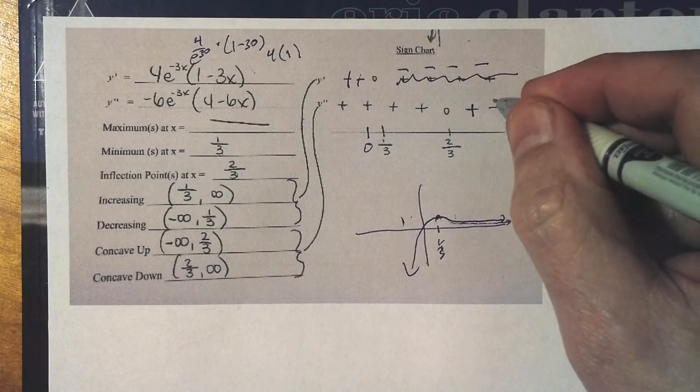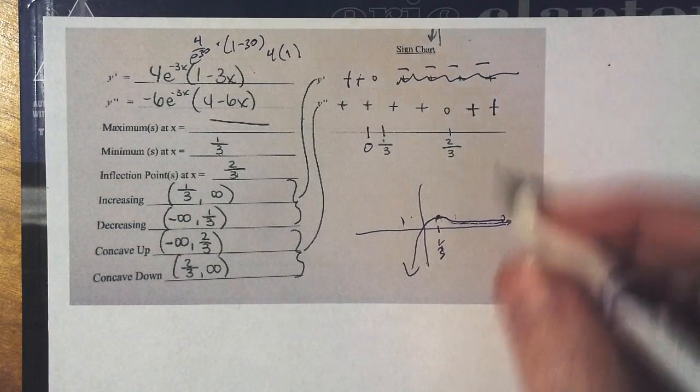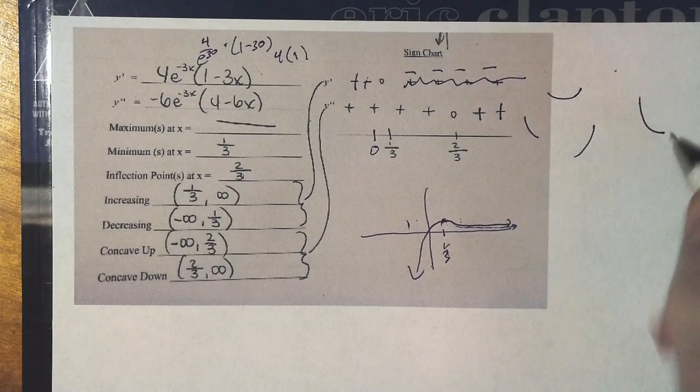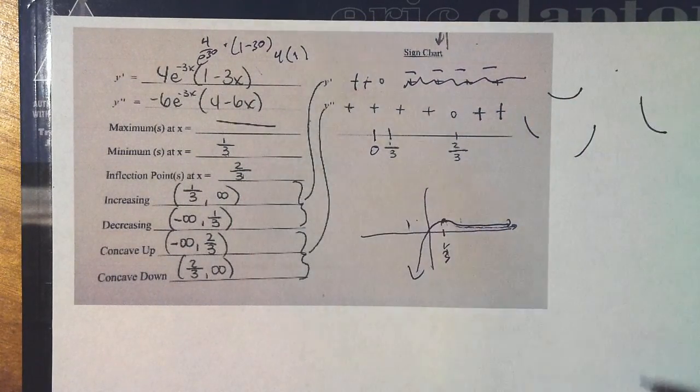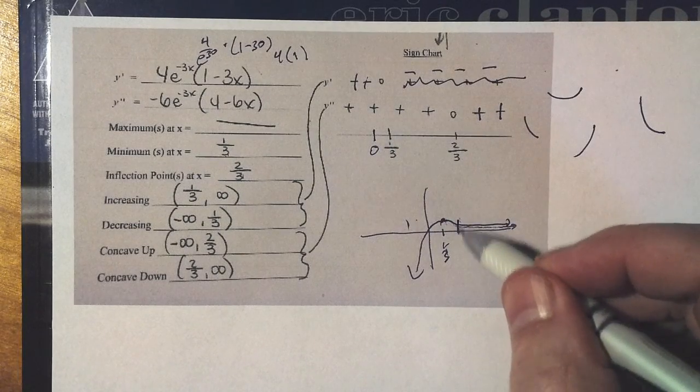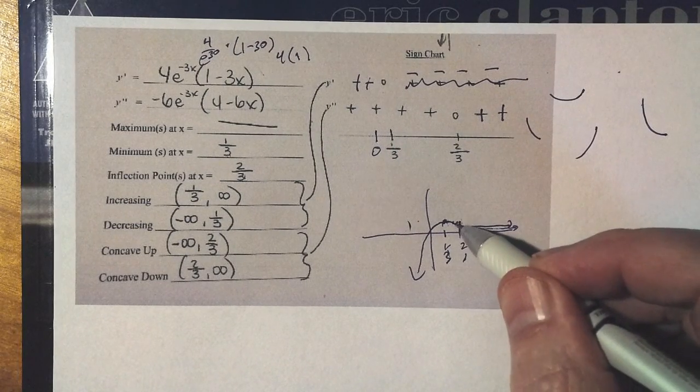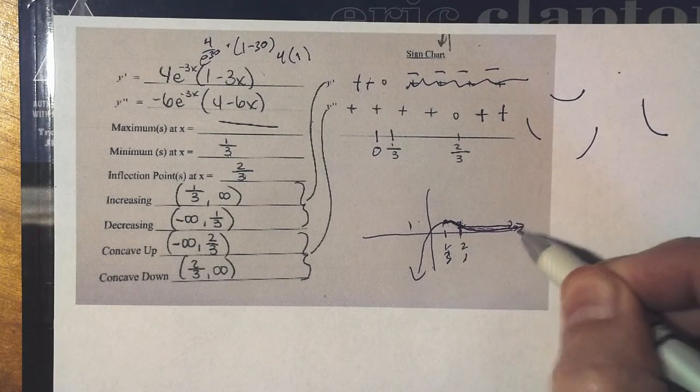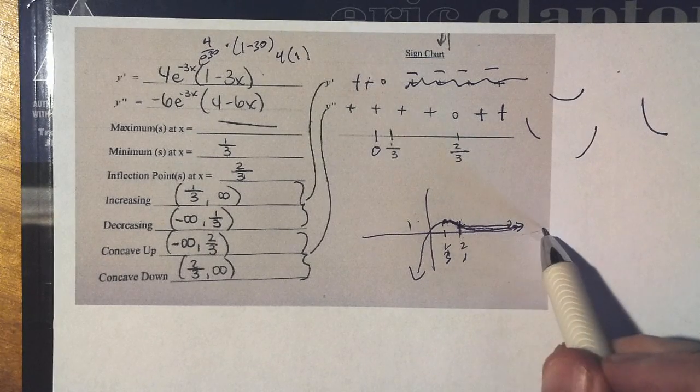And this is positive, which means the graph is cupping up. I mean, take a look. From right here, somewhere in here is two-thirds. The graph is cupping down, cupping down, and it changes to cupping up. And you showed that on your graph. It's cupping up to the right.